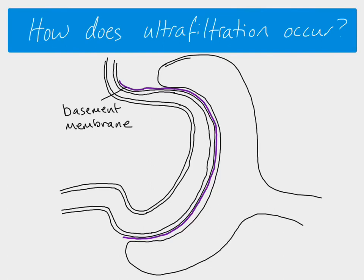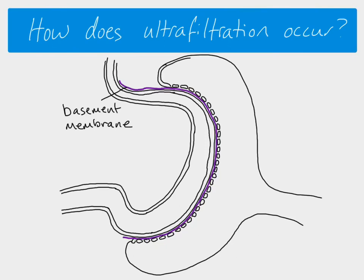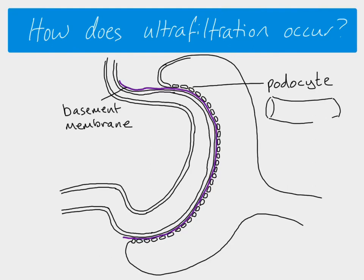Then we have the lining of the Bowman's capsule, which is quite special. That inner lining of the Bowman's capsule is lined by specialized cells called podocytes — you only find those on this inner lining. The outer lining of the Bowman's capsule is just regular epithelial cells. These podocytes basically wrap around where the capillary is, and what you end up with are lots of gaps where it's easier for substances to move across.